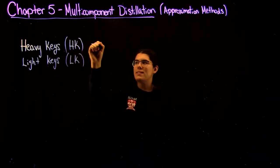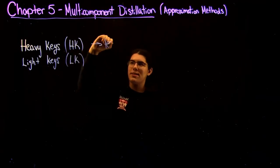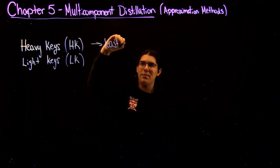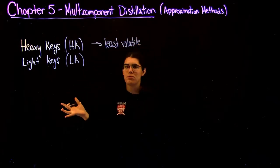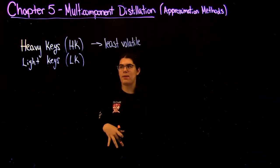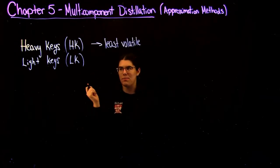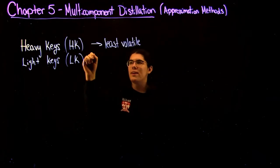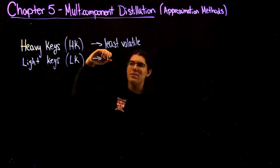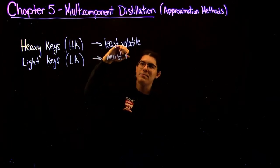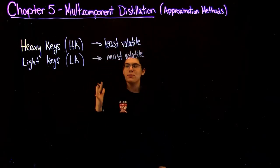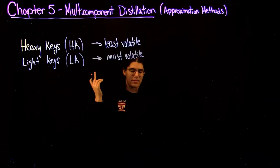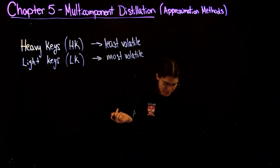So what a heavy key is, is it's going to be your least volatile component that is in your mixture. So that means we usually assume that most of the heavy keys will be found in the bottoms, and not a lot comes out of the top of the distillation column. On the other hand, the light key is your most volatile component. So most of your light key will come out of the top of your column, and you won't see a lot coming out of the bottom.